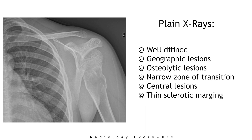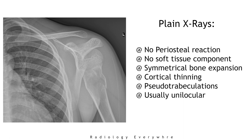Unicameral bone cysts are well-defined geographic lytic bone lesions with a narrow zone of transition, mostly seen in skeletally immature patients, usually centrally located, with a thin sclerotic margin visible in the majority of cases. Typically, these are 6 to 8 cm in size. There is no periosteal reaction or soft tissue component if there is no fracture.